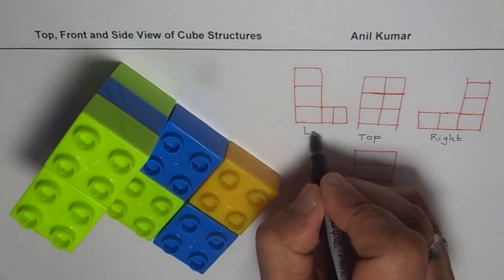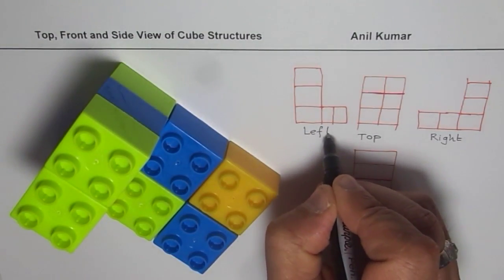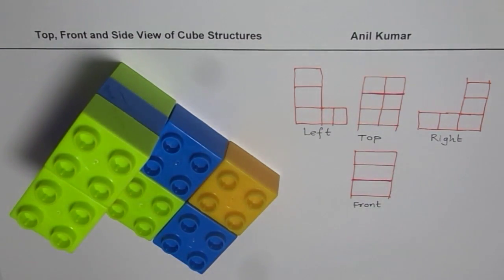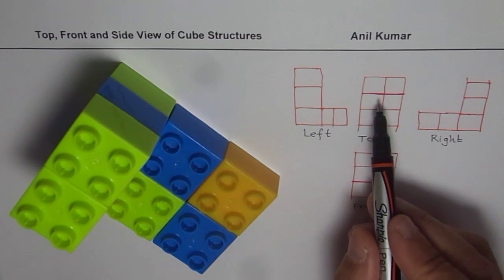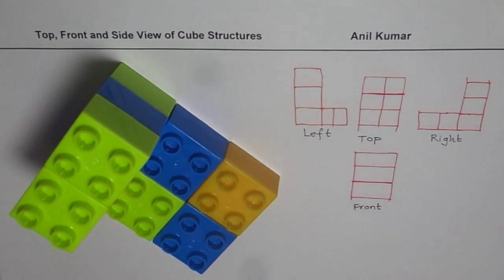In general, when showing the top, front, and side views of a cubic structure, the important thing is to indicate change in depth, and that change in depth is indicated by a bold line.